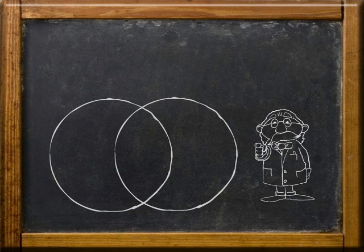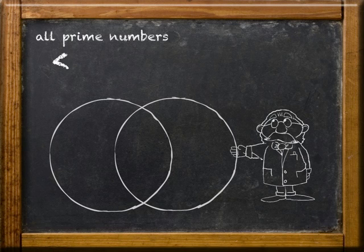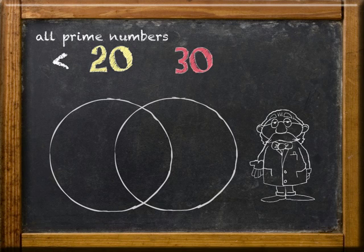Now we can look at something a little more complicated. Let's compare a set of numbers and a composite number. In this case, we need to look at all prime numbers less than 20 on the left, and the composite number 30 on the right.